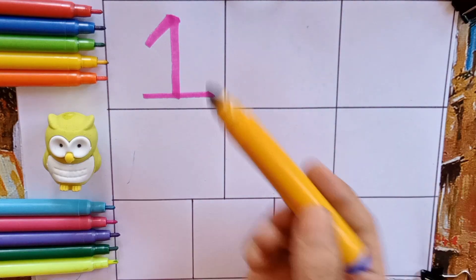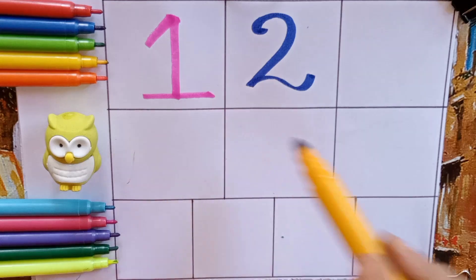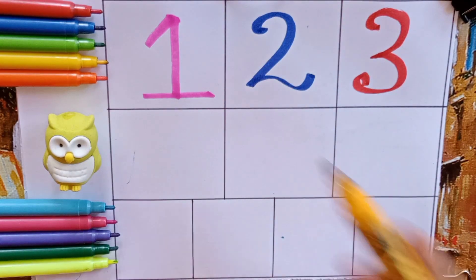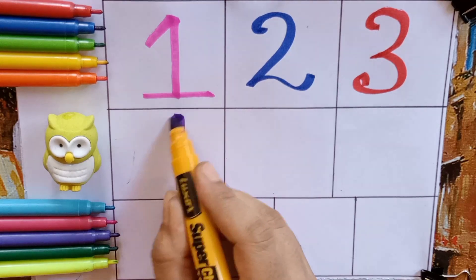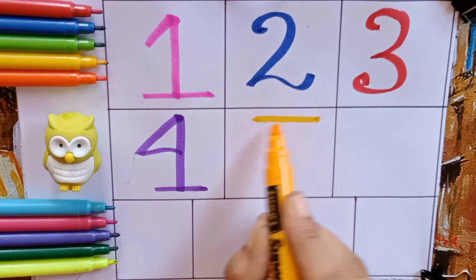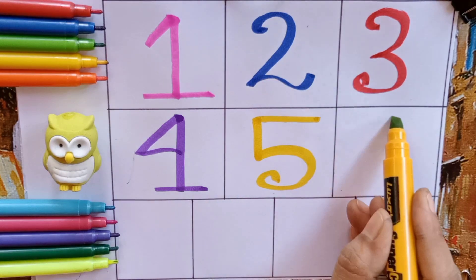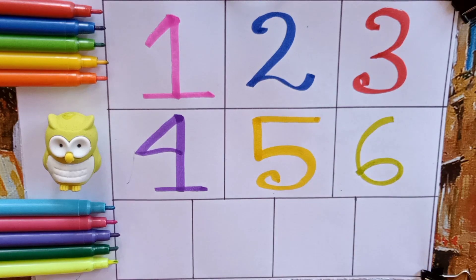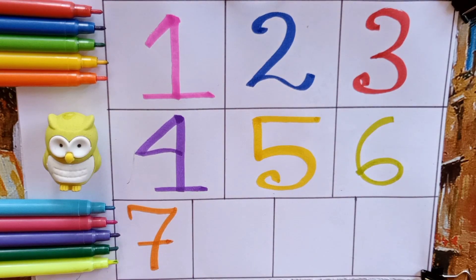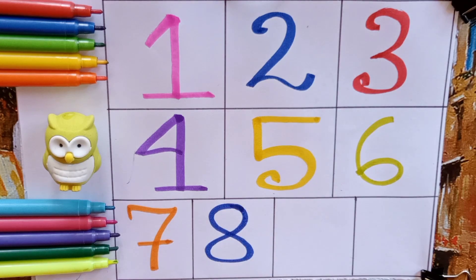F-O-U-R, four. Yellow five, F-I-V-E, five. Green six, S-I-X, six. Orange seven, S-E-V-E-N, seven. Blue eight, E-I-G-H-T, eight.